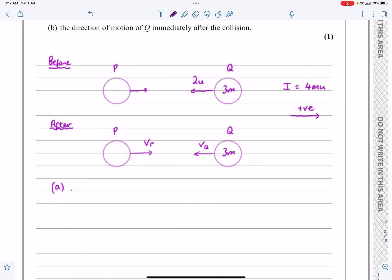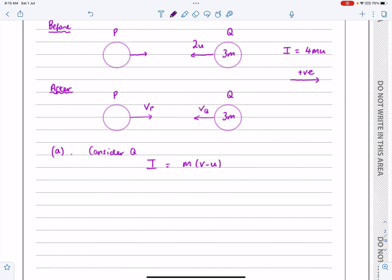Let's tell the examiner what we're doing. Consider particle Q. Impulse is given by changing momentum, V minus U, that shouldn't be an issue to you at all. So if I'm going to take to the right as positive, like I've just said, if I'm going to take to the right as positive up there, then keep that standard all the way through.